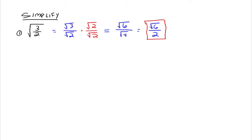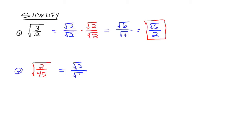It's really that we have rewritten the square root of 3 halves to be the square root of 6 divided by 2. It's just rewritten in a different form. Now let's try another one — the square root of 2 forty-fifths. Again, 2/45 is a fraction, so let's see if we can separate this up to the square root of 2 over the square root of 45.